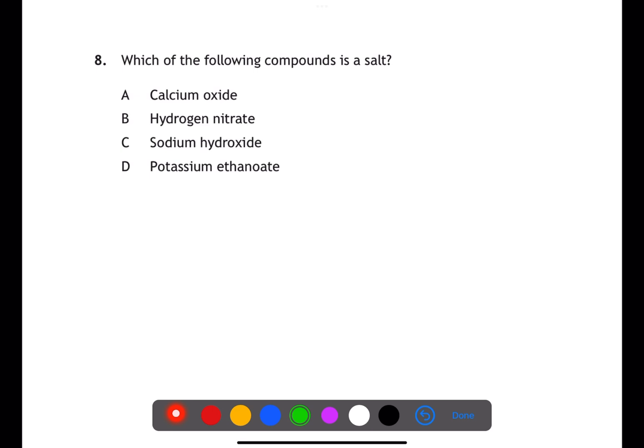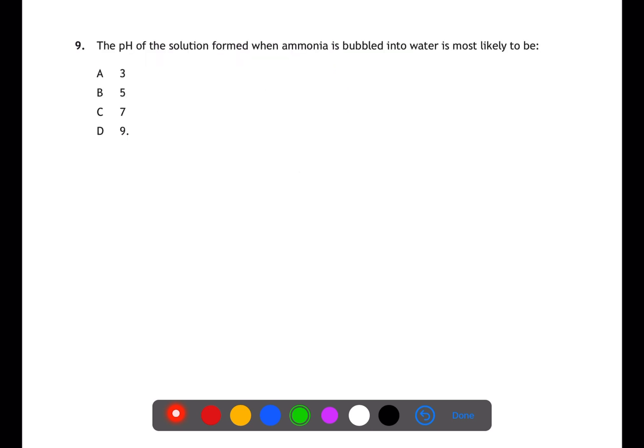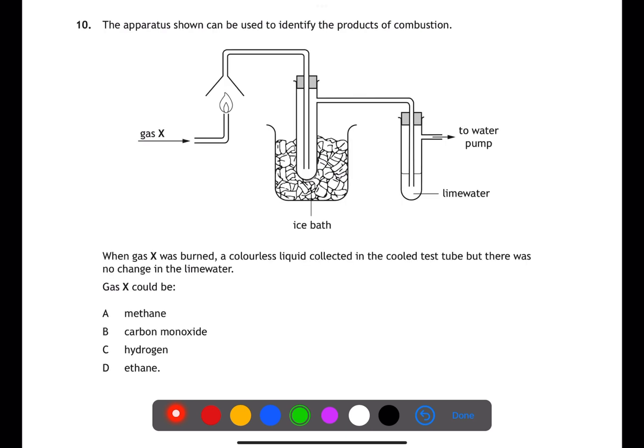Questions such as this are wanting to know if you understand what a base is. A base is a metal oxide, metal hydroxide, or metal carbonate. A calcium oxide is a base. B hydrogen nitrate dissolved in water would be an acid. C sodium hydroxide is also a base. D potassium ethanoate is formed during neutralization and is therefore the salt, which is soluble and is a weak base. When it's bubbled into water, it will form a solution with a pH greater than seven, which means the answer is D, pH 9.